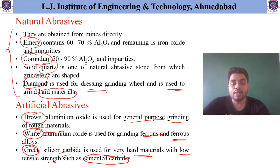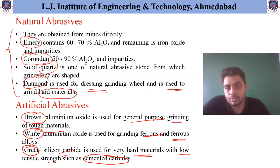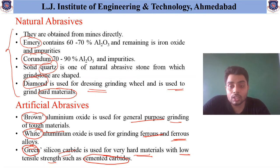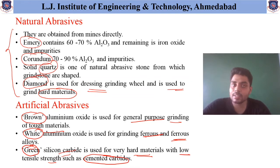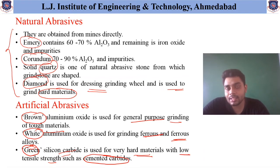Based on requirement: for general purpose use brown aluminum oxide; for grinding ferrous materials or ferrous alloys use white aluminum oxide; and for very hard materials with very low tensile strength such as cemented carbide, green silicon carbide is used. These are the different types of abrasives available in the market used based on requirement.